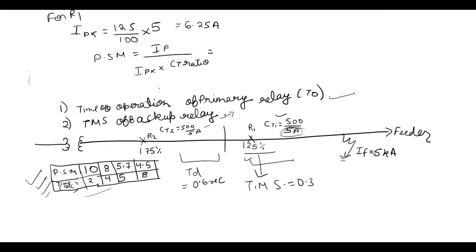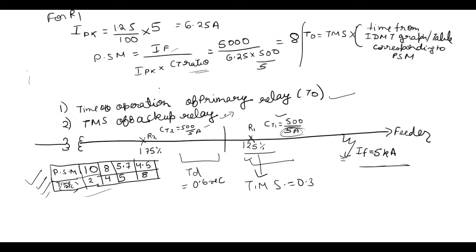Which is equal to, now fault current, so this is our fault current 5 kilo ampere which is 5000 amperes into pickup current which is 6.25, and now CT ratio which is 500 upon 5, which is equal to 8. So now T0 is equal to TMS time multiplier setting into time from IDMT graph or table. In our case it is table corresponding to PSM which in our case is 8.